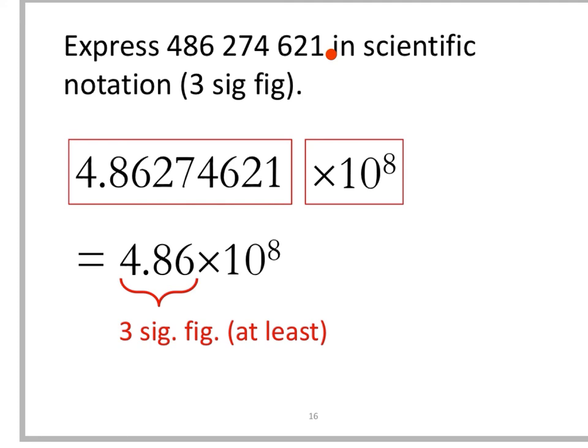Now express this large number in scientific notation and correct your answer to three significant figures. Again, remove the decimal point from the right towards the left. We have one, two, three, four, five, six, seven, eight - remove the decimal point for eight times. Therefore we come up with the number 4.86 times